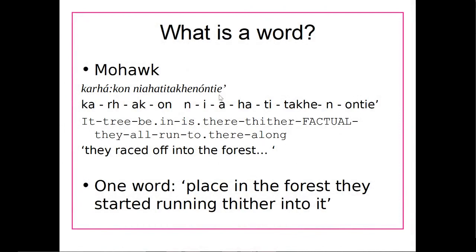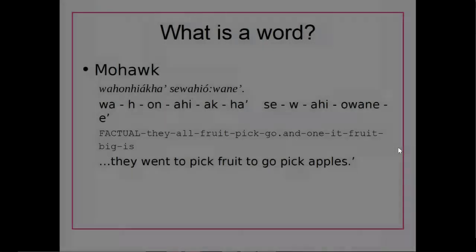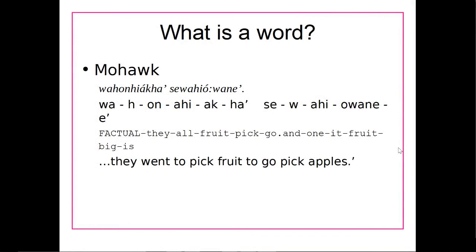In the same language, Mohawk, we also have these big long words where there is no pause between parts — for example, between 'ni,' 'e,' and 'ah.' They're all connected into one word. These little dashes mean we say this without a pause in between. So in Mohawk, they can have either shorter words or longer words. Basically, if there's no pause in between what you're saying, that's an indication that it might be one word. So you can have a couple of big long words meaning something like 'they race' or 'they run off into the forest,' or several bits of meaning in one word meaning 'they went to pick fruit.'